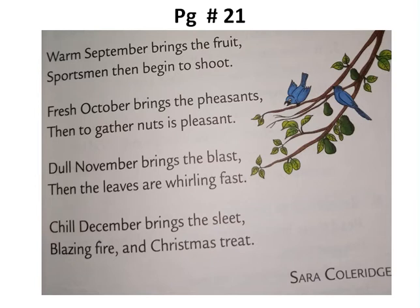Next, the four couplets on page number 21: Warm September brings the fruit, sportsmen then begin to shoot. First October brings the pheasants, then together nuts is pleasant. Dull November brings the blast, then the leaves are whirling fast. Chill December brings the sleet, blazing fire and Christmas treat.